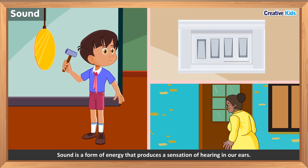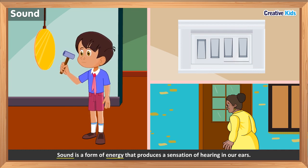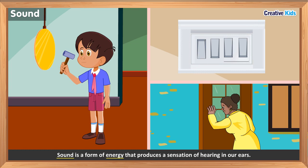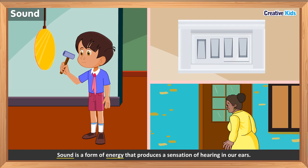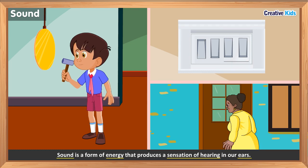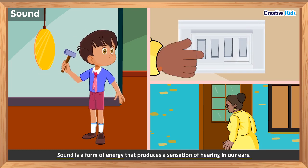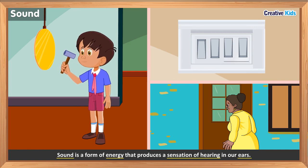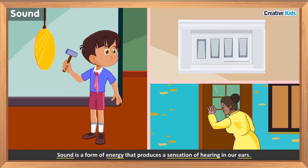Like heat and light, sound is also a form of energy. This sound produces a hearing sensation in our ears, due to which we can hear it. So sound can be defined as: sound is a form of energy that produces a sensation of hearing in our ears.